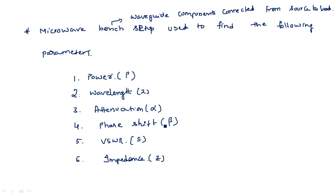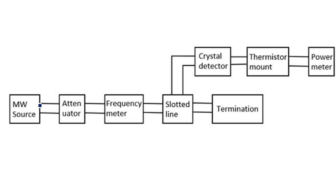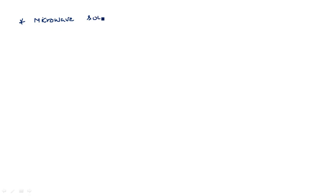Now let us see what are the various components involved in the connection or diagram of this bench setup and the purpose of each one. The first and foremost component is the microwave source. The microwave source is used to generate an electromagnetic signal at microwave frequencies.